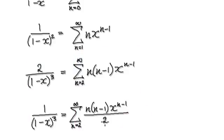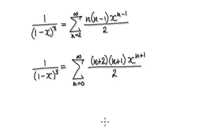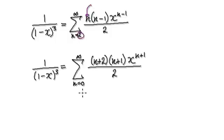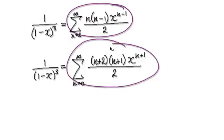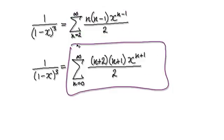Now it's just a matter of tidying up. Here we start at n equals 2. If you want to start at n equals 0, decrease the lower index by 2, but then replace all the n's by increasing them by 2. So you put n plus 2 into each n throughout the expression. The whole thing then becomes this — it's much neater. So this is your final series.